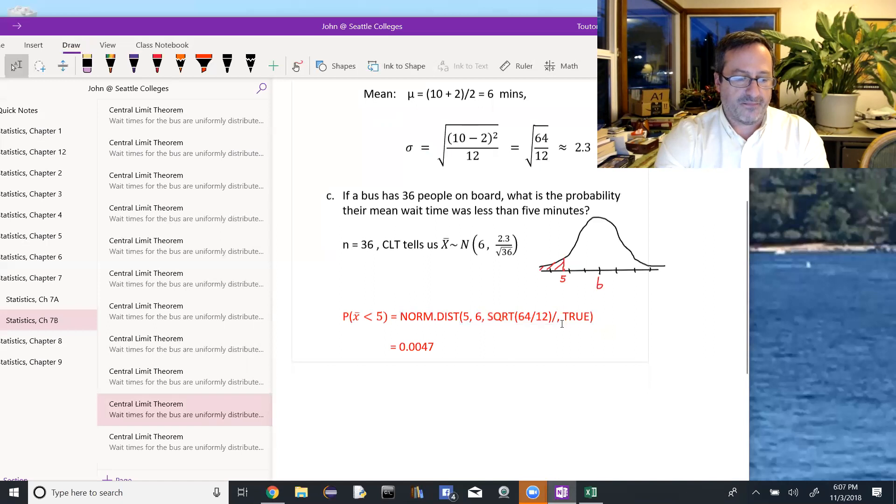So technically, this would be square root of 36. I did that by hand, saying it was 6. So either one of those methods would work. And then true for the cumulative value. And that's a very small 0.0047.